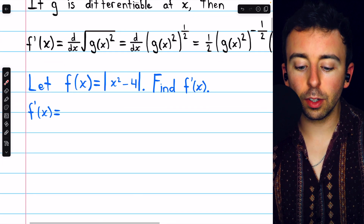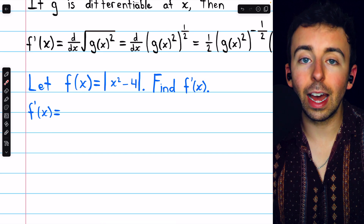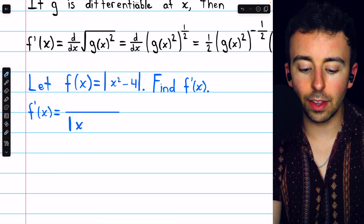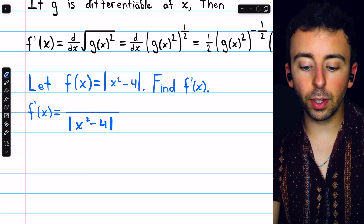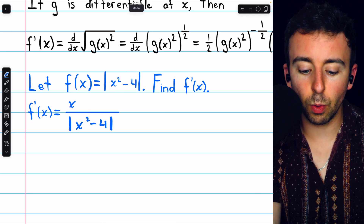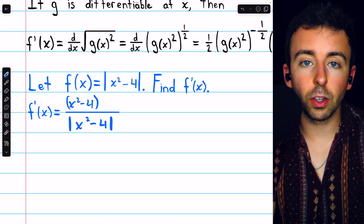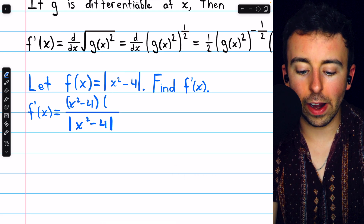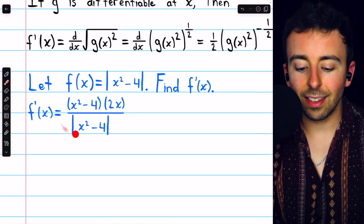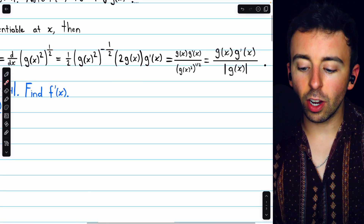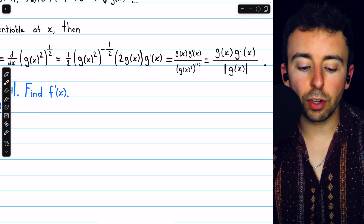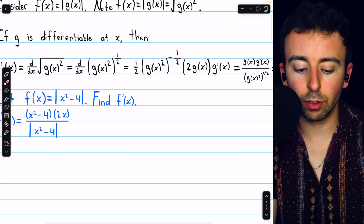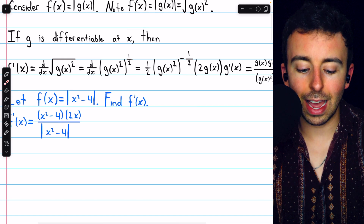Let's use this formula to try out a quick example. Let f of x equal the absolute value of x squared minus four, and we want to find the derivative f prime of x. To take the derivative of an absolute value function, we put the absolute value function in the denominator — the absolute value of x squared minus four — and then put the inside of the absolute value expression, x squared minus four, in the numerator. The only other thing we have to do is multiply by the derivative of what's inside the absolute value bars. The thing inside is x squared minus four, and its derivative is 2x. So that's our derivative.